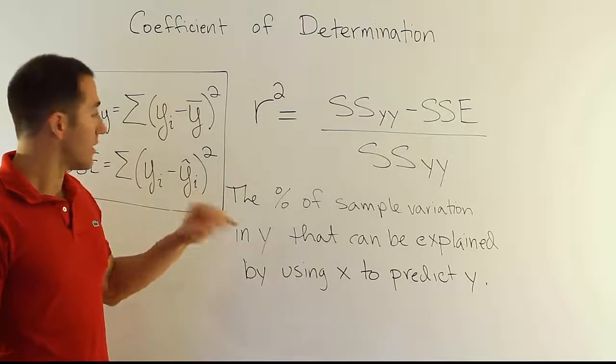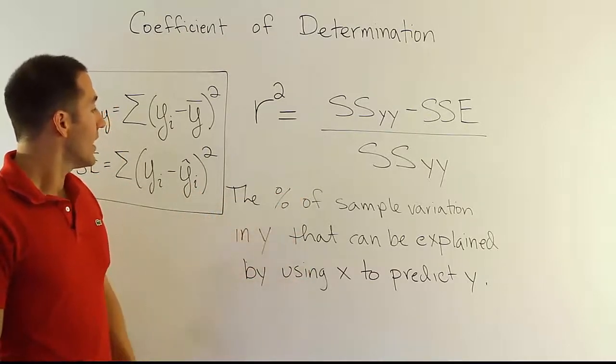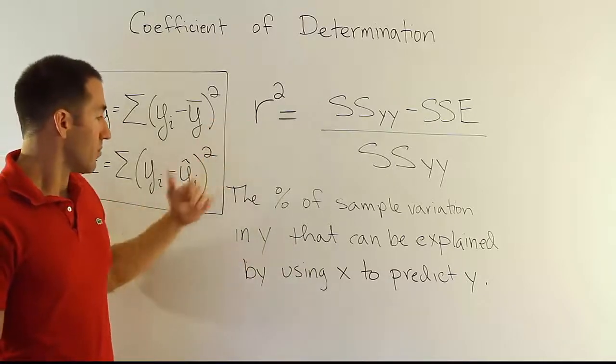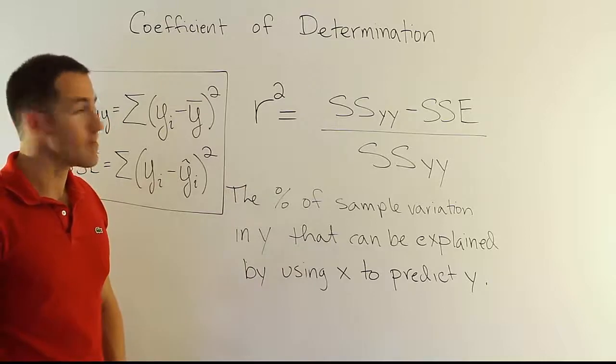Zero means that none of the sample variation in y can be explained by using x to predict y. If the number is close to one, it means lots and lots of the sample variation in y can be explained by x. And that's it.